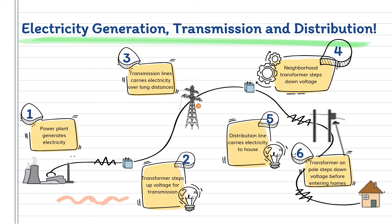To sum up, here are the steps in generation, transmission, and distribution of electricity. First, power plants generate electricity. Next, transformers step up voltage for transmission. Third, transmission lines carry electricity over long distances. Next, neighborhood transformer steps down voltage. Then, distribution lines carry electricity to houses. Then, pole transformers step down electricity before it enters houses. And finally, electricity reaches our homes.